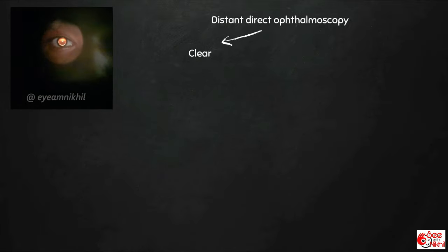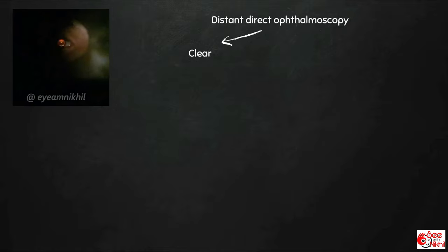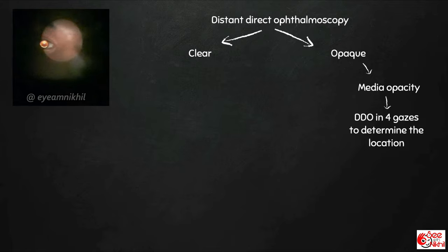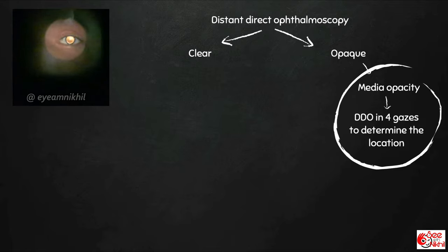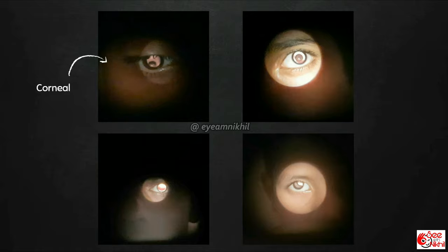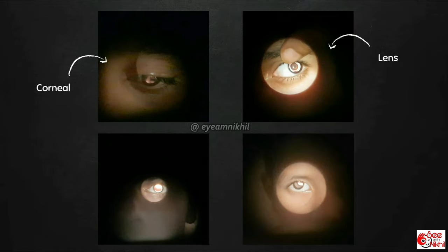If the ocular media is clear, a red glow without any black shadow or opacity is seen, as in this case. If there is an opacity or black shadow in the red glow, it indicates media opacity. A distant direct ophthalmoscopy in four gazes is done to determine the location of the opacity by parallax principle. If the opacity is in the corneal plane — as in this case of keratoconus with oil droplet reflex — it will move in the same direction of gaze. Opacity in the iris plane will have no movement in gazes. If opacity is in the lens — as in this case of zonular cataract — it will move in a direction opposite to the direction of gaze.